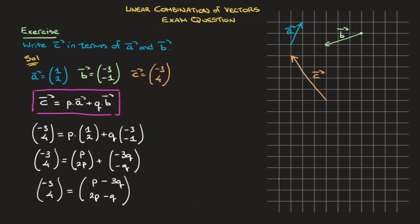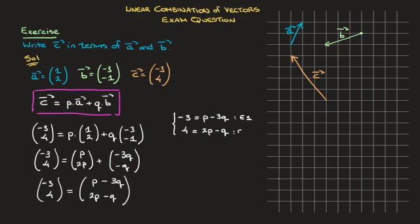Now at this stage, we know that we need to find P and Q such that the vector on the left-hand side, (-3, 4), equals the vector on the right-hand side. It's important to remember that two vectors are equal if and only if their corresponding components are equal. In other words, negative three has to equal P minus 3Q, and four has to equal 2P minus Q, which leads to two equations. I'll call the top one E1 and the bottom one E2. Our task has now become to solve this pair of simultaneous equations.